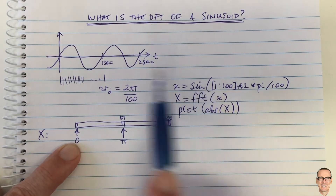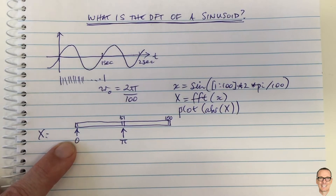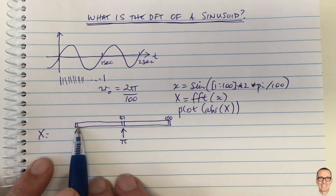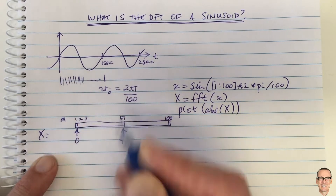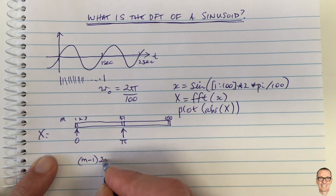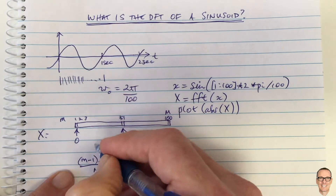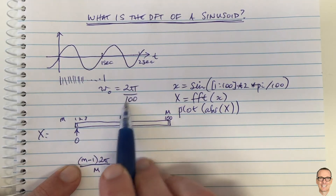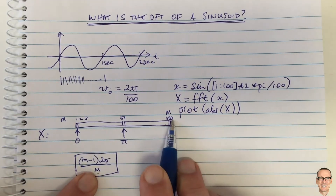Since a sine wave has only one frequency component, we expect just one non-zero element in the DFT. The formula for the frequency of the mth element is (m − 1) × 2π / M, where M is the total number of samples (100 in this case). We need to find which m gives us a frequency of 2π/100.